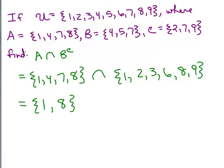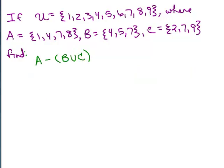Let's try the third one. Why don't you try this one on your own first by putting in the video on pause. The hint is make sure you do what's in parenthesis first. Okay, so A would be this set one, four, seven, eight. And now what is B union C? That's a set.